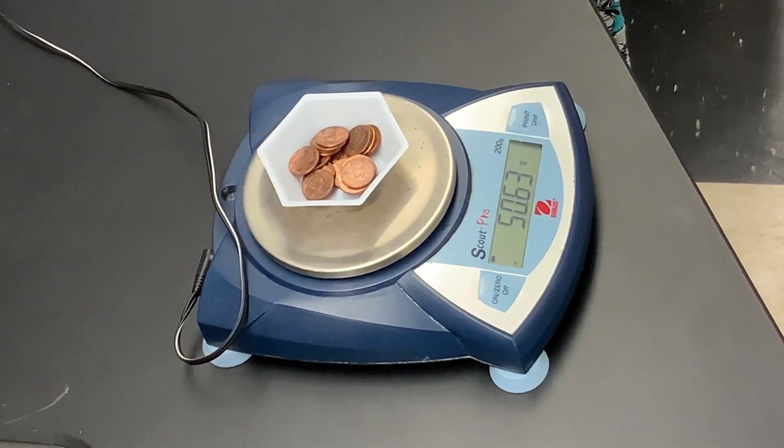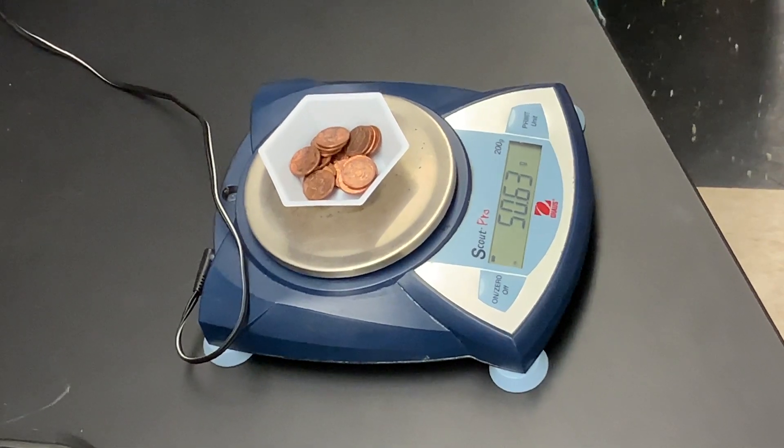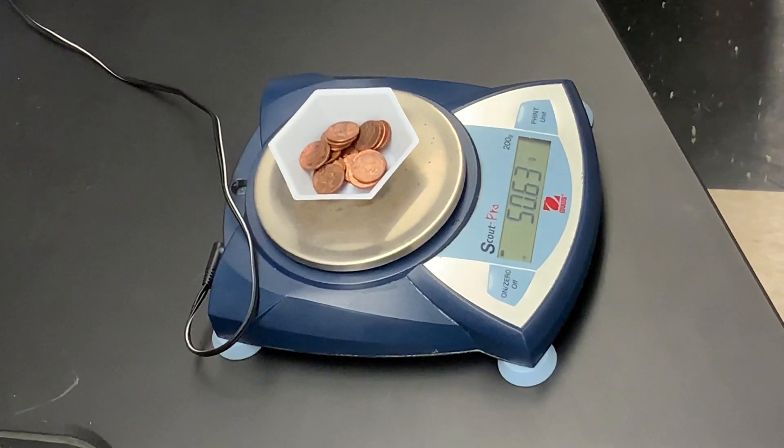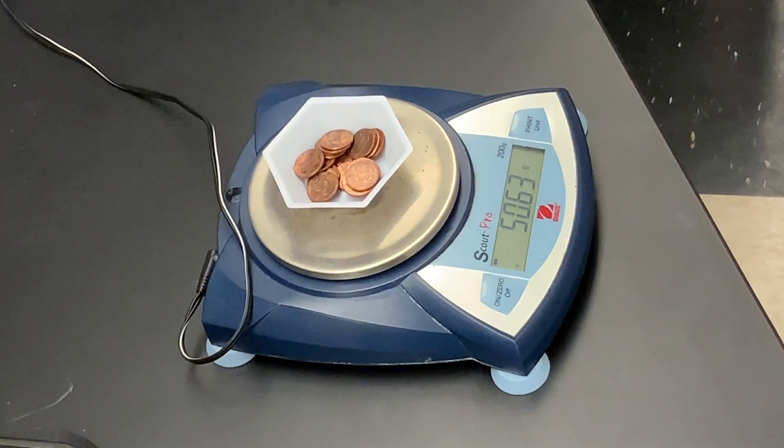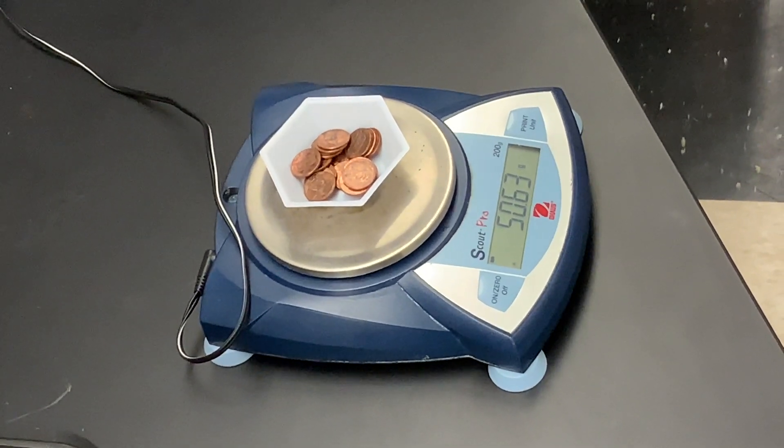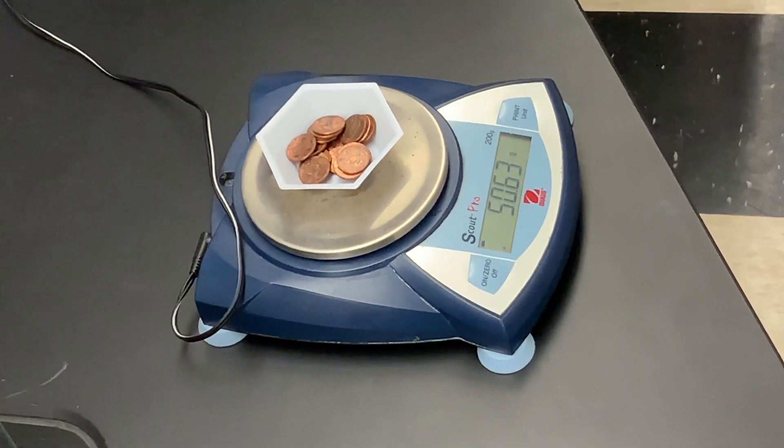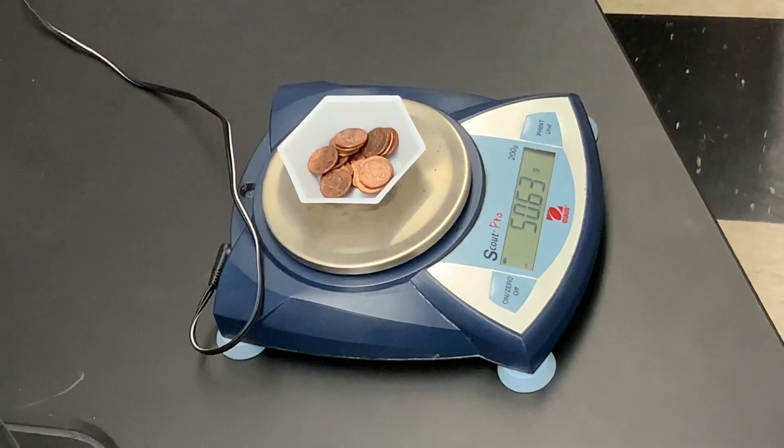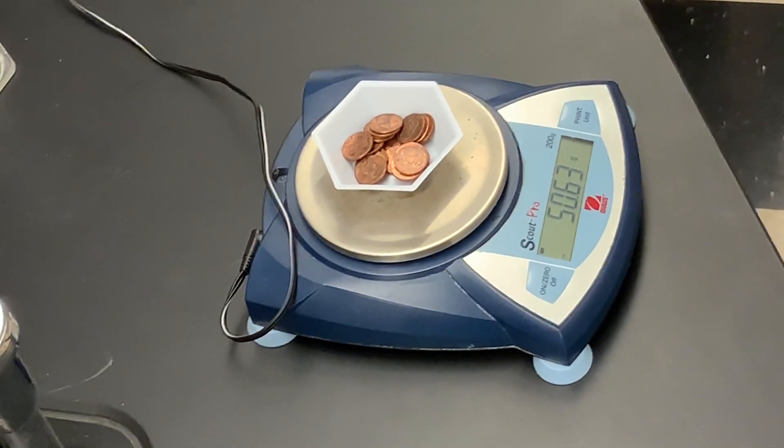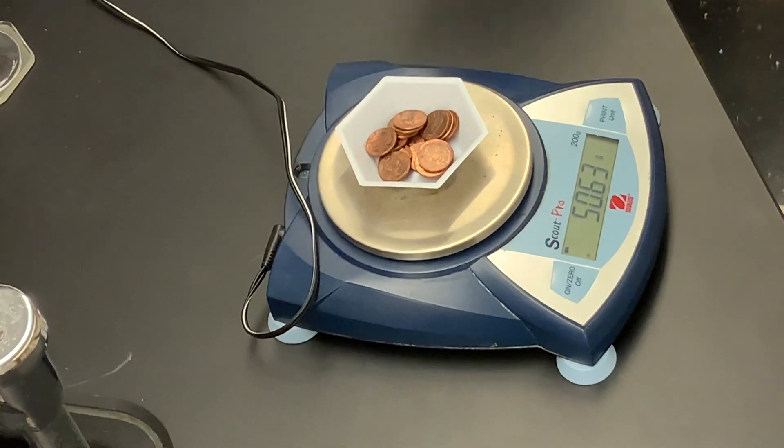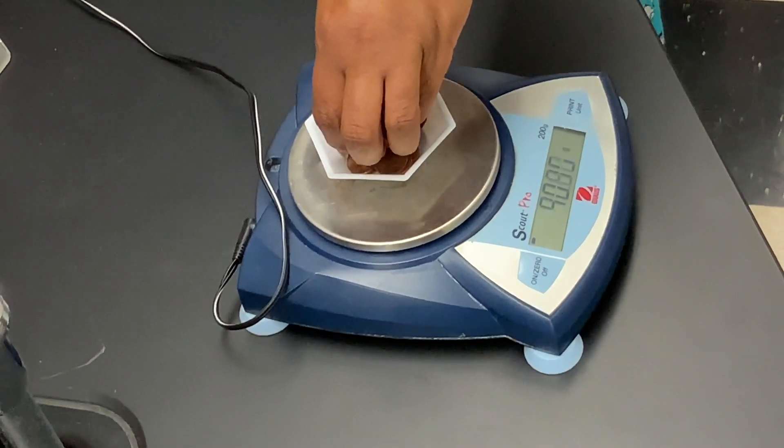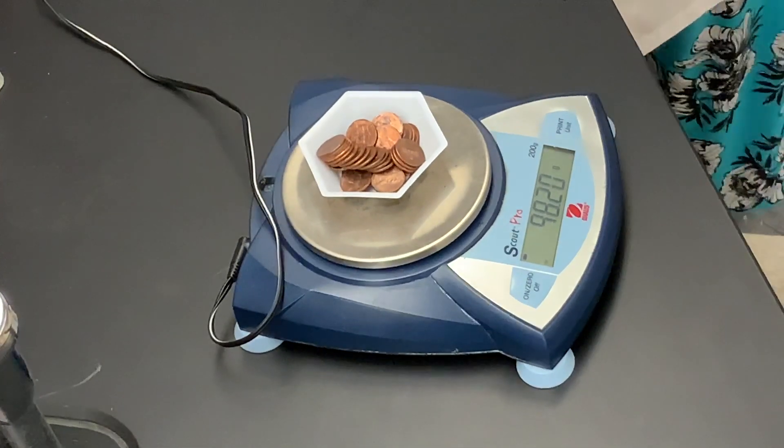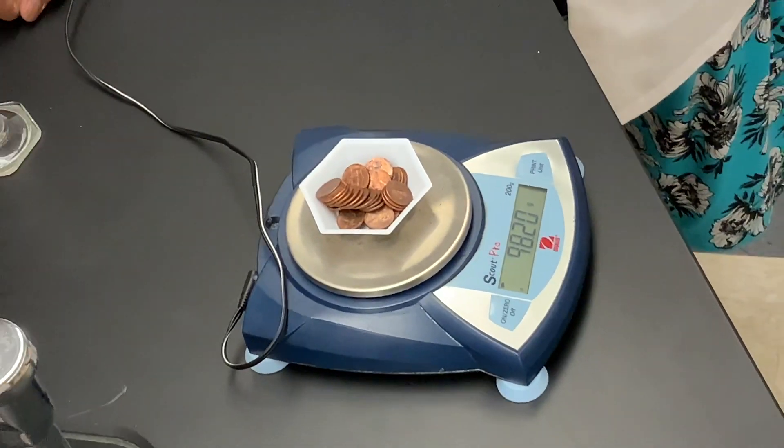Finally, we're going to add 20 more pennies to the 20 that are already there, giving us a total of 40 pennies. We'll place them there gently. Our 40 pennies have a mass of 98.20 grams.